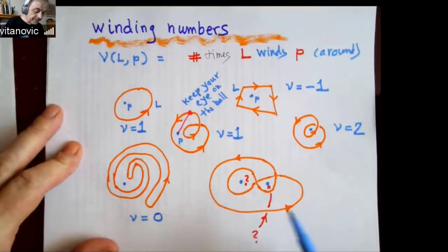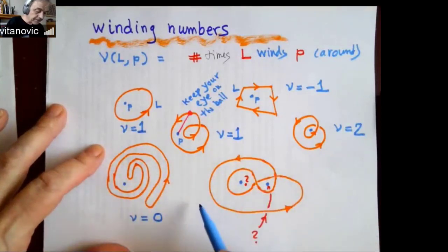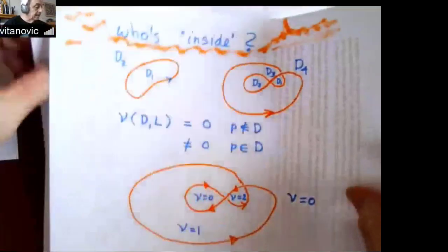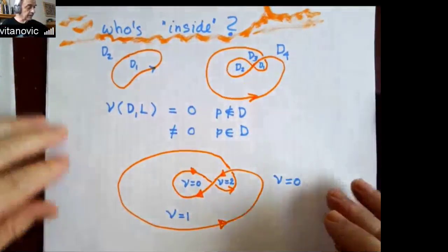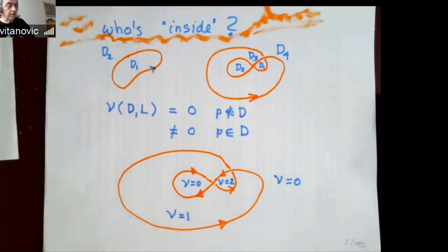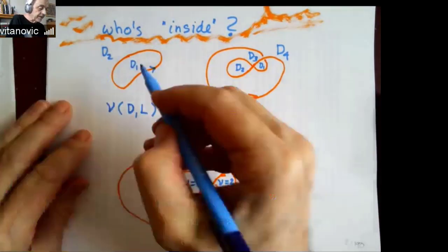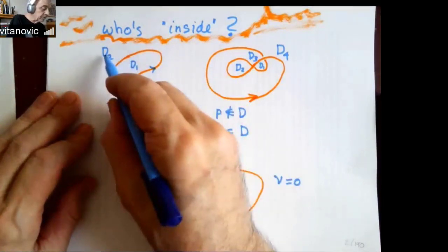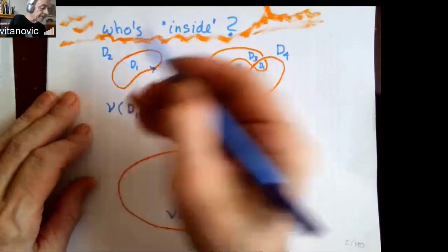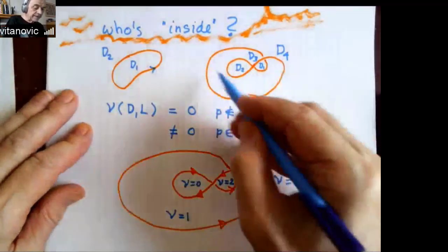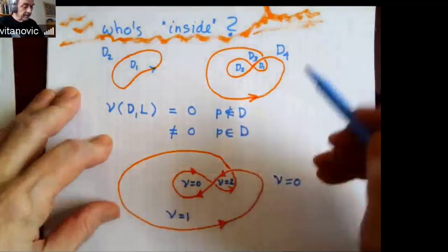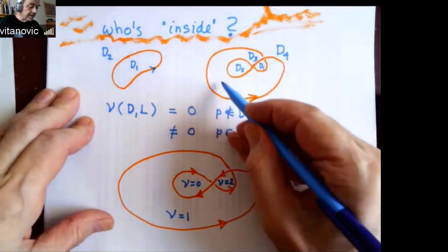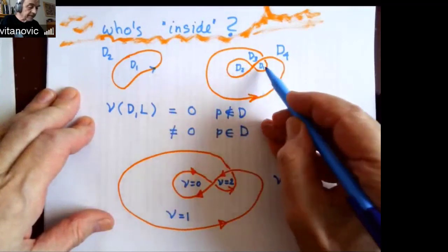Now suppose some crazier thing happens — it runs this way, that way, that way. You can sit in various places, so what are the winding numbers in various places? The main notion here is really not a particular point, but there are whole domains of points — domain 1 and 2 — that have the same winding numbers. Anybody inside the loop will see one winding; anybody outside the loop will see zero windings. And when you have more intersections of the loops, you will have different domains: there is outside, there is a first inside, another inside, and then another domain.